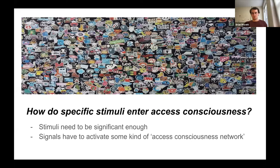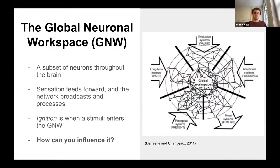Maybe a certain sticker is important to you — maybe you have an affinity for a certain brand, maybe it's just a color that stands out. Whatever it is, it needs to be significant. Whenever it's significant enough, you can imagine it enters a kind of network of significant parts of stimuli that make up consciousness. This line of thinking has been developed into the global neural workspace model, where a subset of neurons throughout the brain takes in sensation and all the inputs from your brain state and unifies them into a globally accessible arena of information, broadcast throughout the brain to allow further processing.